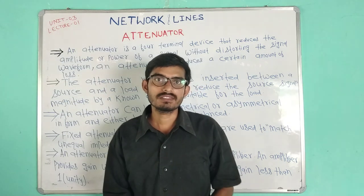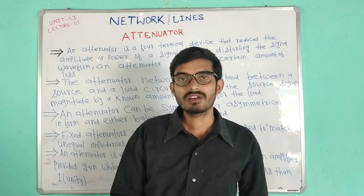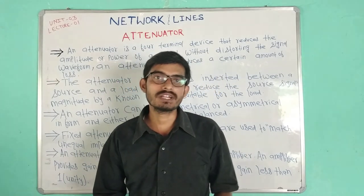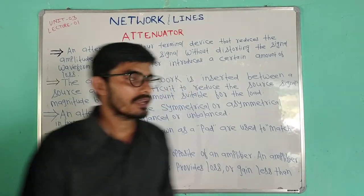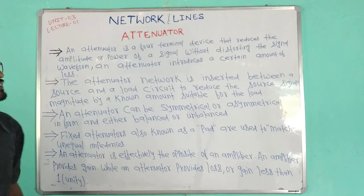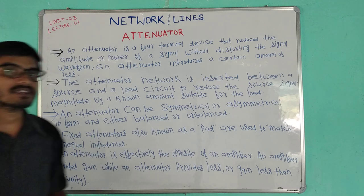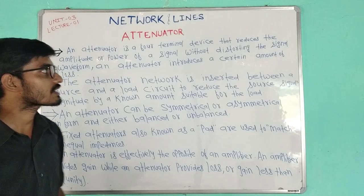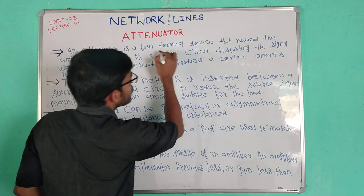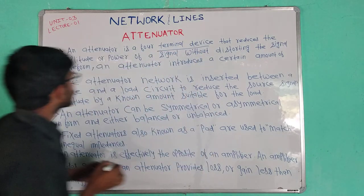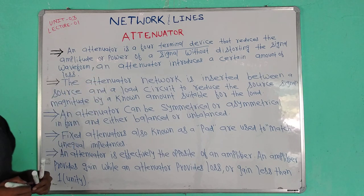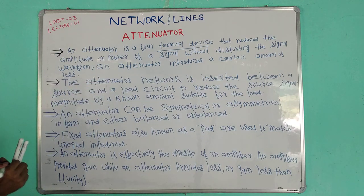Hello everyone. In this lecture, we are going to learn about attenuator. An attenuator is a four terminal device. It is an electrical device which attenuates — it reduces the amplitude and power of a signal without distorting the signal waveform.